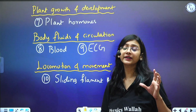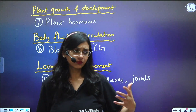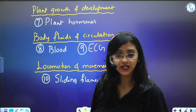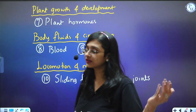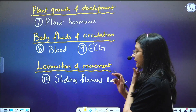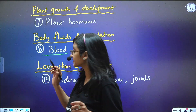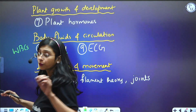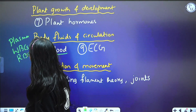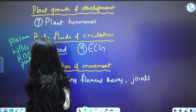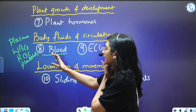From Plant Growth and Development, plant hormones are very important, with continuous questions from past three years. From Body Fluids and Circulation, questions are coming from blood — including different types of WBCs, proteins present in plasma, blood clotting, and blood grouping. You need to know about plasma, RBC, WBC, and platelets collectively.